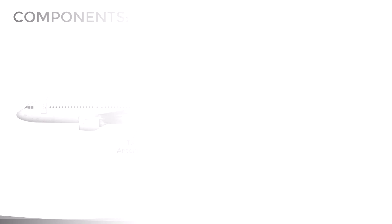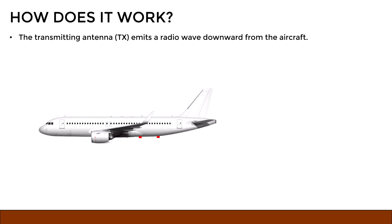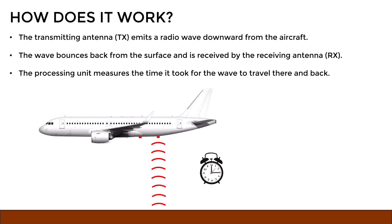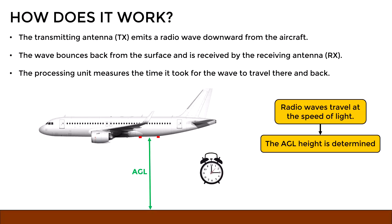Let's now see how the system works. First, the transmitting antenna emits a radio wave downward from the aircraft. When this wave reaches the surface, it bounces back to the aircraft and is received by the receiving antenna. Then the processing unit calculates the time it took for the wave to go and return. And since we know that radio waves travel at a known speed, which is the speed of light, the system can calculate the current height of the aircraft above ground level.